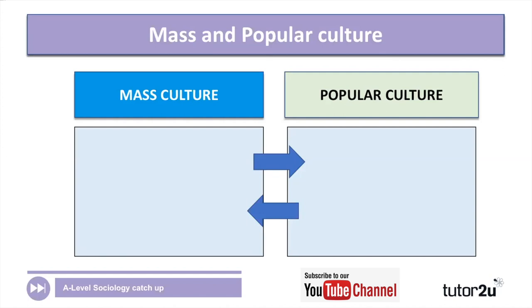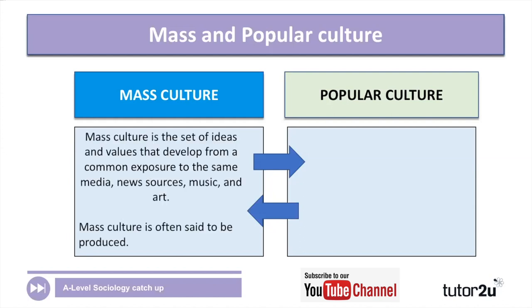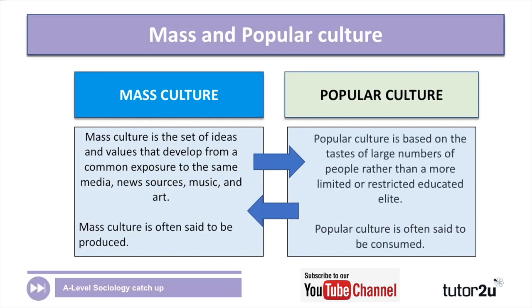On to mass culture and popular culture — I've put these two together because there's a crossover, though there is a slight difference. Mass culture is a set of ideas and values that develop from common exposure to the same media, news sources, music, and art. The word 'mass' means a large number of people take part. Mass culture is often said to be produced — something like reality TV is a well-produced piece of media made on purpose because they know a large number of people are going to watch it.